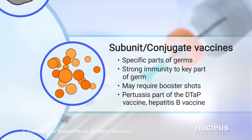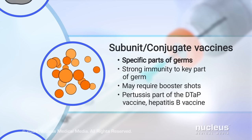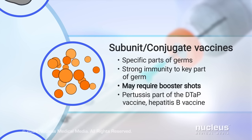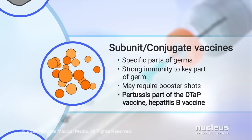Subunit and conjugate vaccines use only a specific part of a germ. They provide strong immunity to that key part of the germ. These vaccines may also require booster shots. Examples are the pertussis part of the DTaP vaccine and the hepatitis B vaccine.